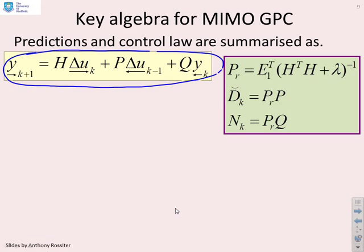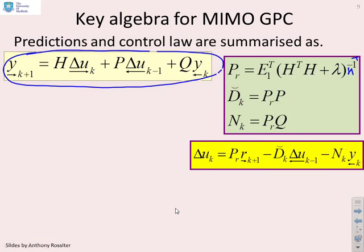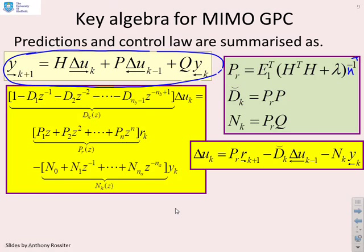The definition of the control law, again, we've got a missing H transpose there, is the same. It's the same there and it's the same there. So, so far, the fact that we've gone multivariable hasn't made any difference.